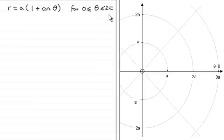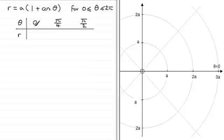So if that's the case, what I'd want to do is build up a set of tables. If I was to look at the first quadrant where theta was any angle between 0 and pi upon 2, then when theta equals 0, the cosine of 0 is 1, so you're going to get 1 plus 1 is 2 times a is going to be 2a.